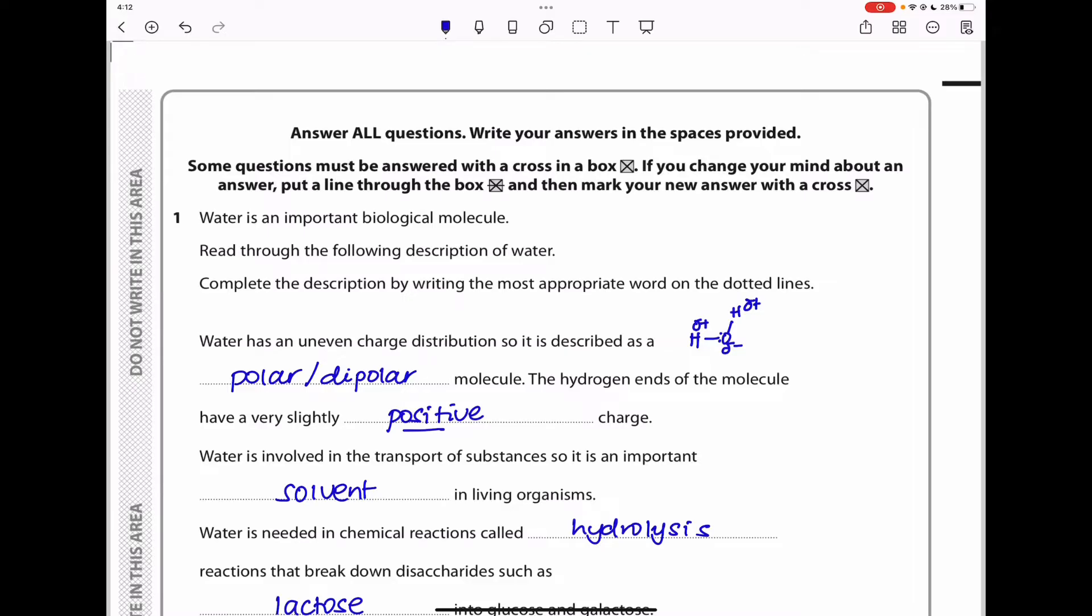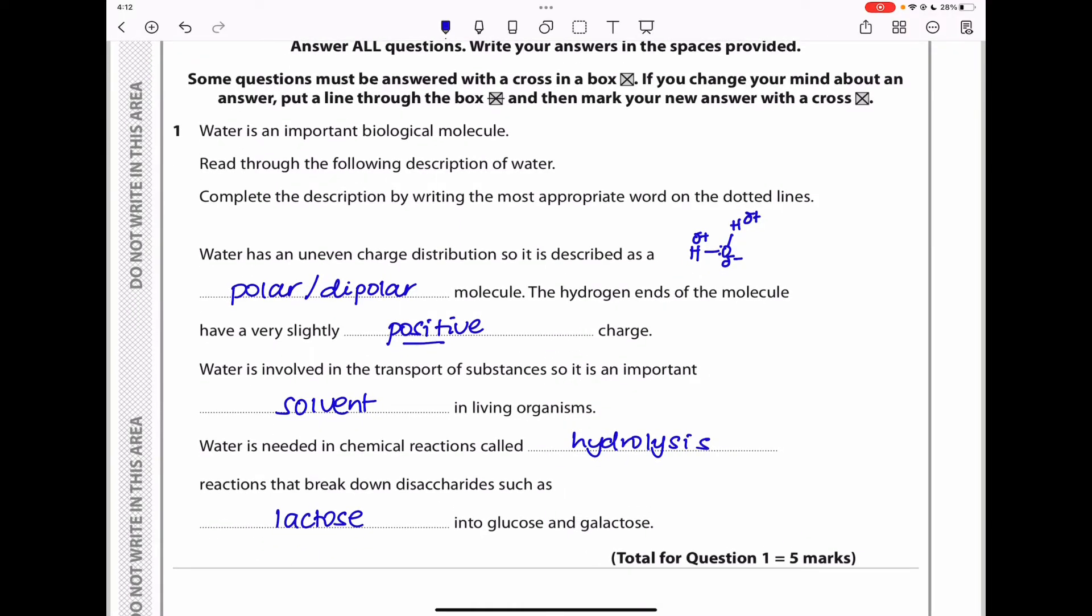The hydrogen ends of the molecule have a very slightly positive charge. Water is involved in the transport of substances, so it is an important solvent in living organisms. Water is needed in chemical reactions called hydrolysis reactions that break down disaccharides such as lactose into glucose and galactose. If you answered appropriately, you would get five marks for this question one.